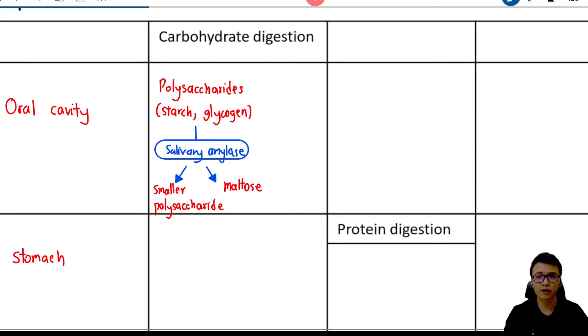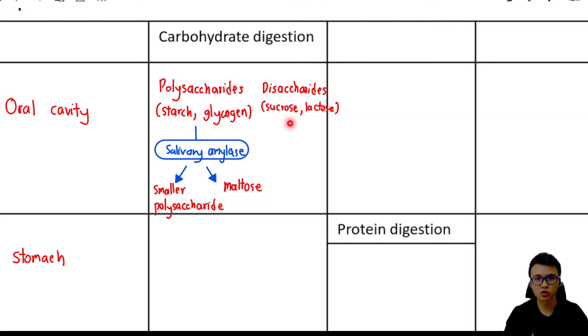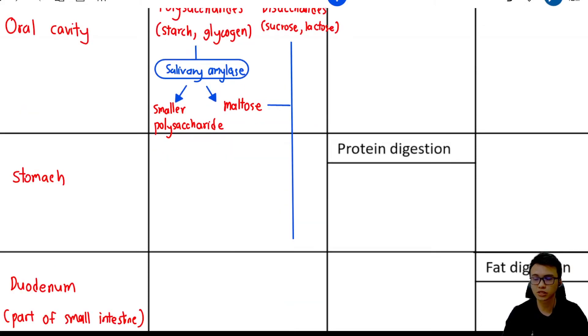Besides that, sometimes we'll just directly consume disaccharides. Examples of disaccharides are sucrose or lactose. So maltose, sucrose, and lactose will move to the stomach. Same goes to the small polysaccharides. They will go to the stomach as well. But remember, there is no carbohydrate digestion in the stomach. The food will just pass through the stomach and reach the duodenum.